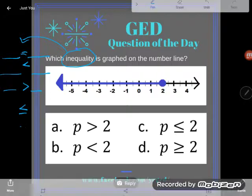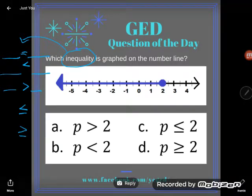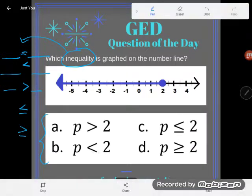than or equal to, or greater than or equal to. And so you can see we have four inequalities down here: p > 2, p < 2, p ≤ 2, and p ≥ 2.